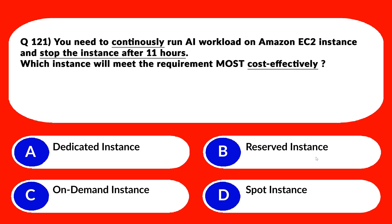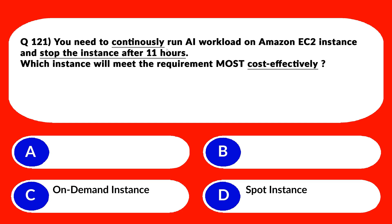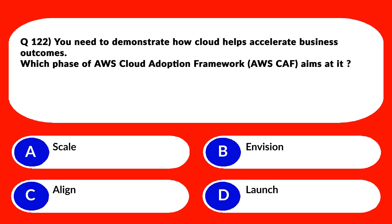Option A says dedicated instance and option B says reserved instance. Dedicated instances and reserved instances are the most costly options. As per the question we need the most cost-effective, that is the cheaper option, so A and B are out. Option D says spot instance — but since the AI workload needs to run continuously, spot instances cannot meet that requirement. We'll eliminate D and lock option C, on-demand instance, as the correct answer.